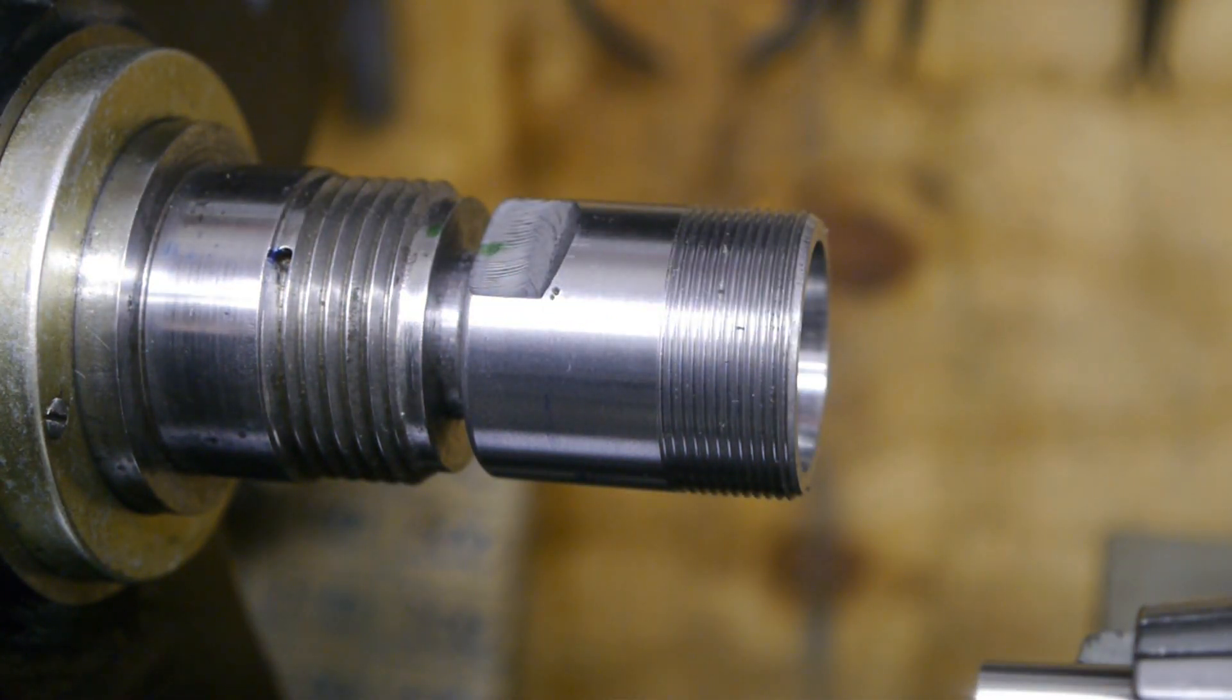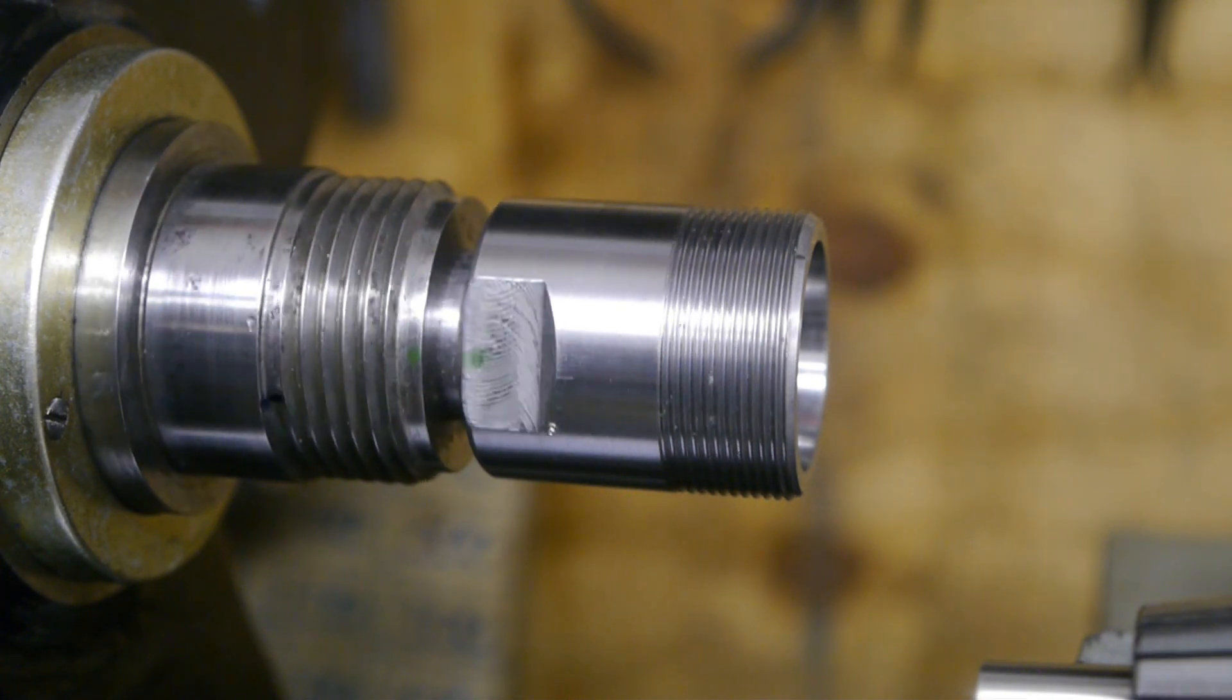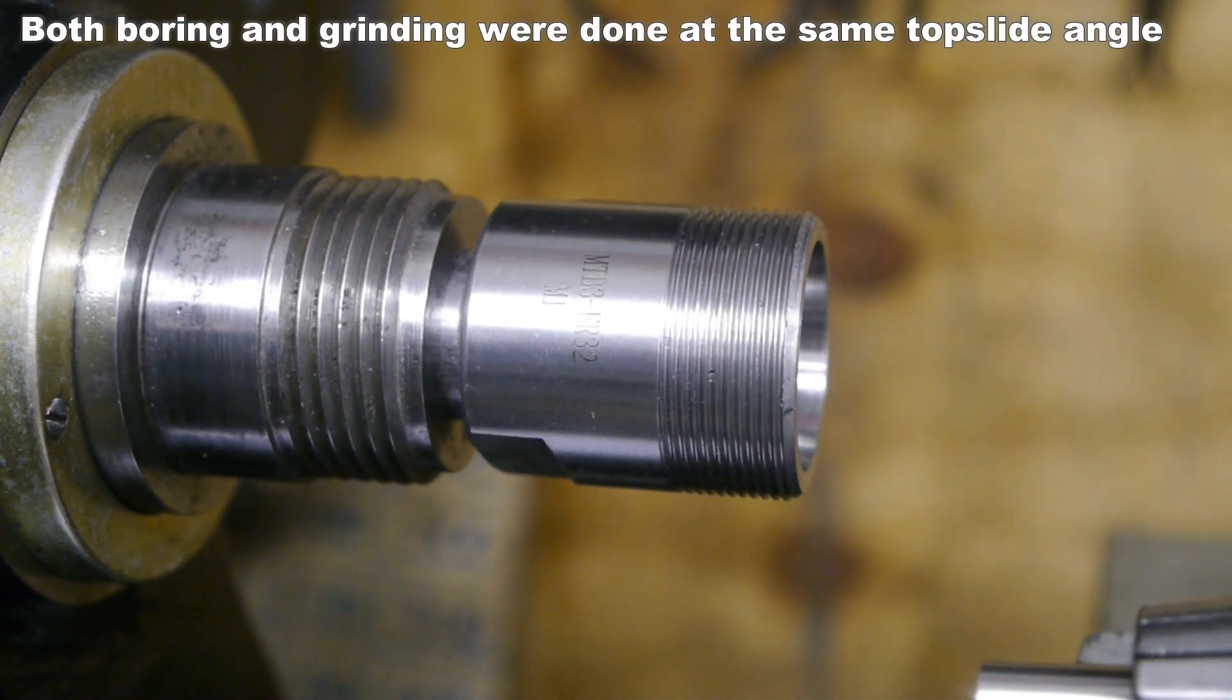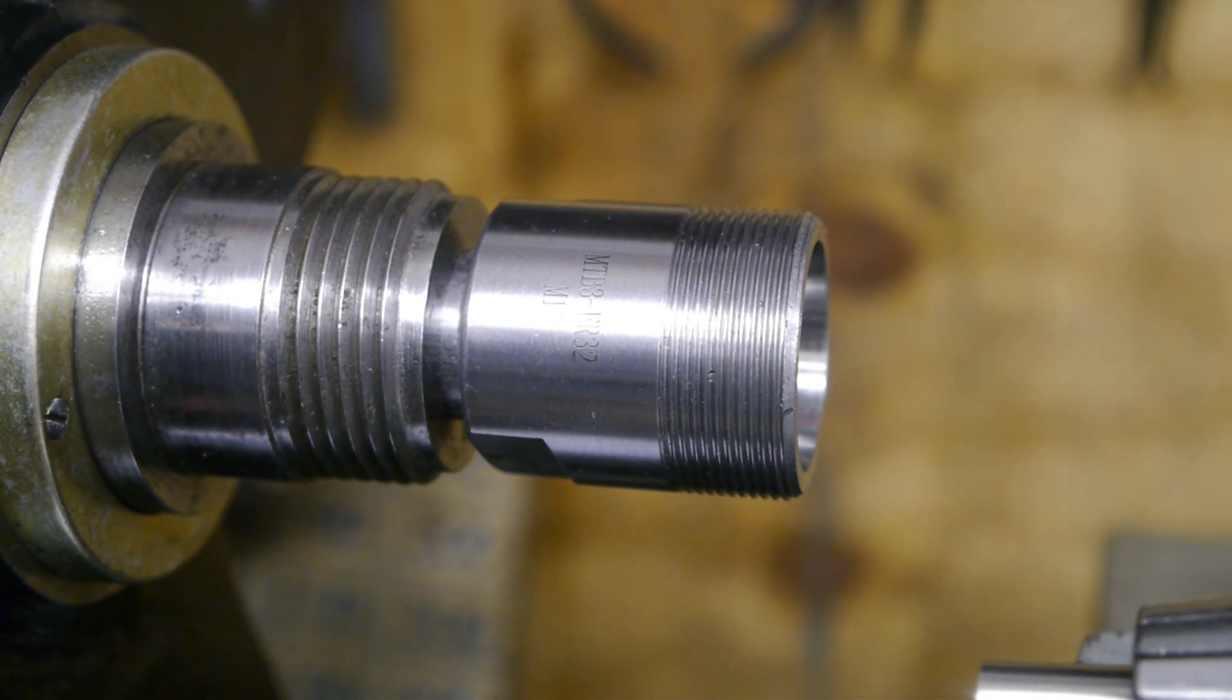After boring out the chuck this changed, and the taper would no longer hold the collet. But now after grinding the taper, things have changed back to how it was before. So even though the grinding wasn't a great success, it does look like it did improve things a bit. It's a bit strange. Perhaps I should have taken a spring cut, or maybe the gib is a bit loose, allowing the tool rest to slightly rotate under the tool pressure. I don't know.